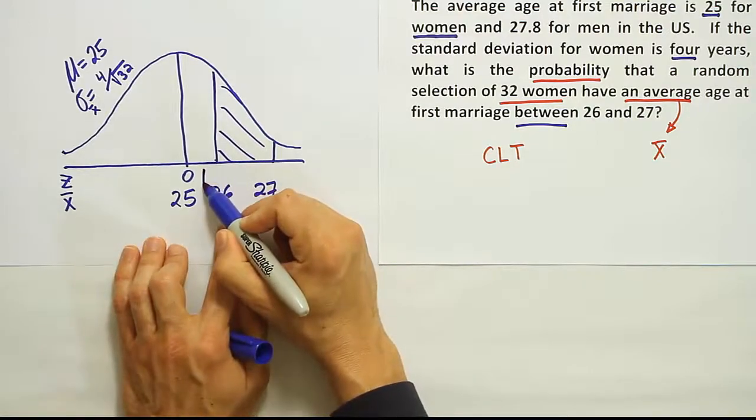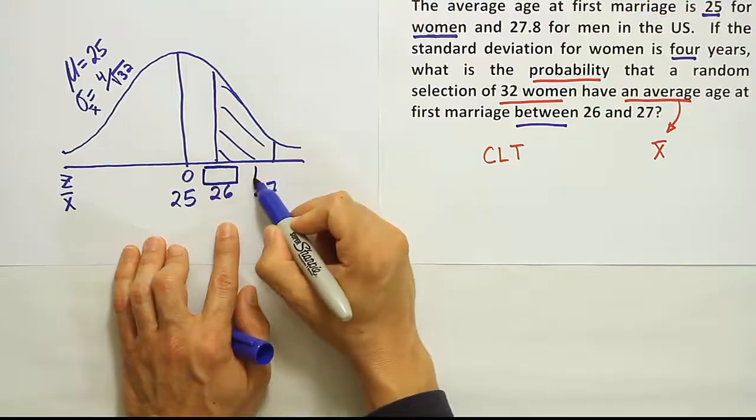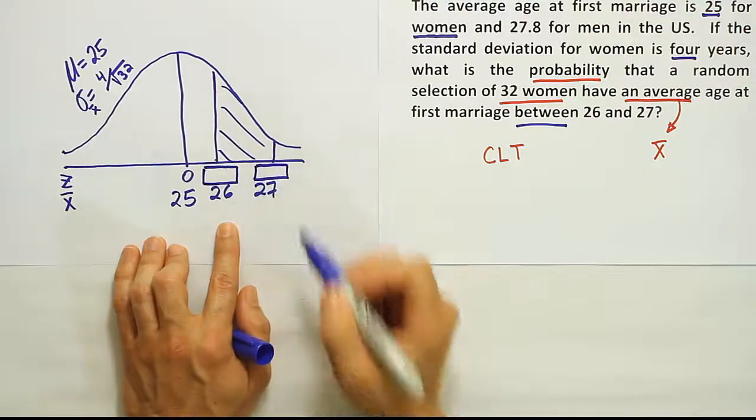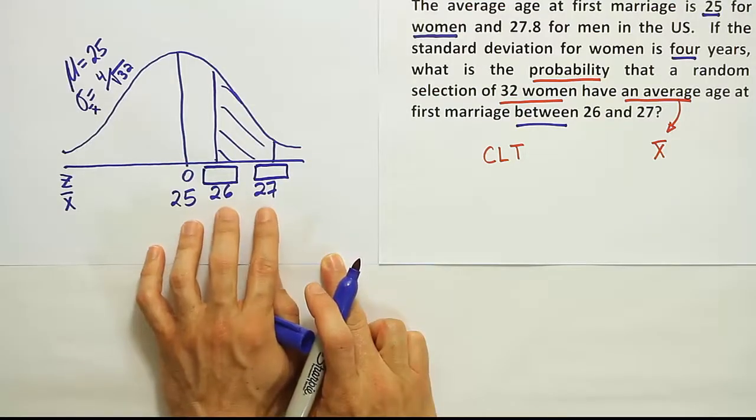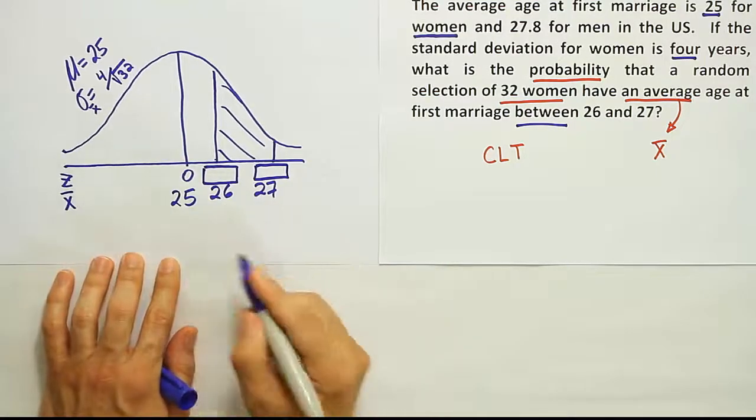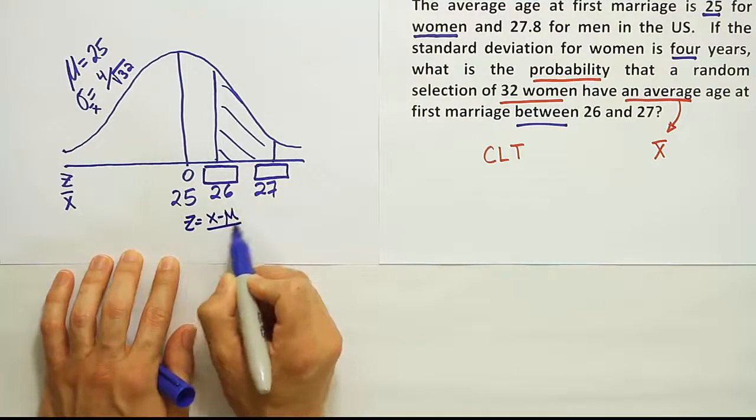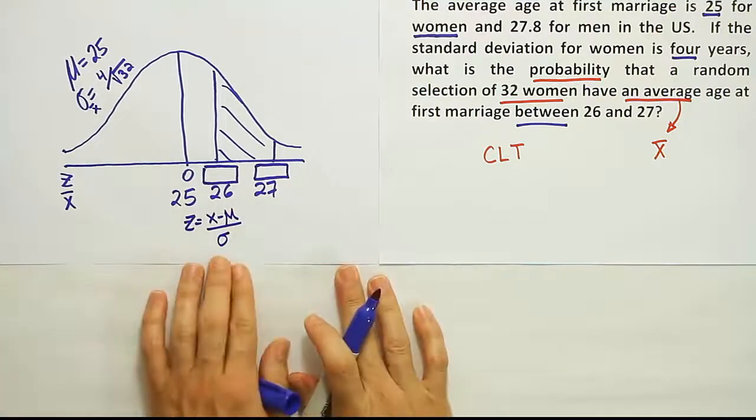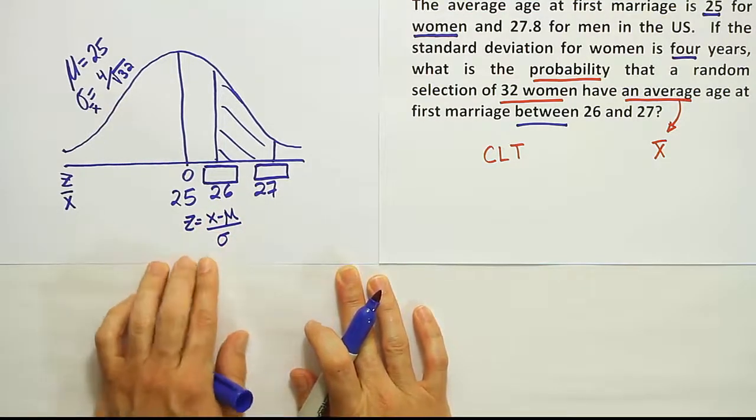So I'm looking for this area in between. My goal next is to go to my Z table. Remember, once I have my drawing done and it's shaded, I'm supposed to go to my Z table. But I can't go there until I have Z scores to look up. I can't look up these ages, they're not Z scores. So I have to convert them first to Z scores.